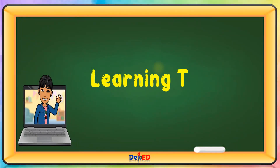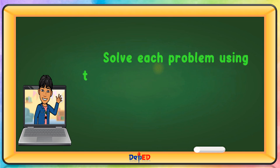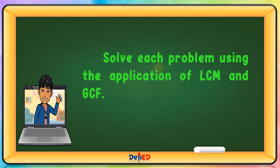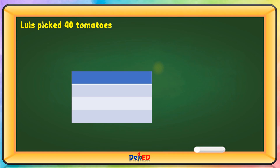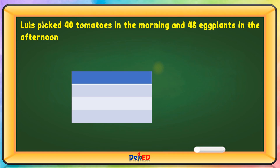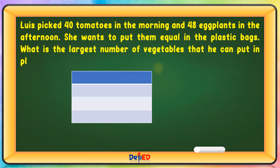Learning Task 3. Solve each problem using the application of LCM and GCF. Luis picked 40 tomatoes in the morning and 48 eggplants in the afternoon. He wants to put them equally in plastic bags. What is the largest number of vegetables that he can put in each plastic bag?